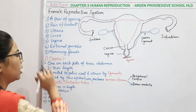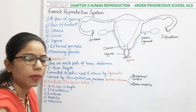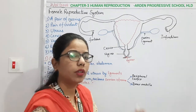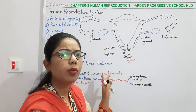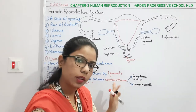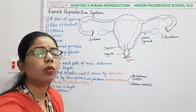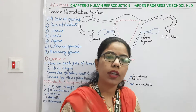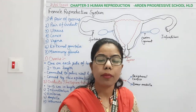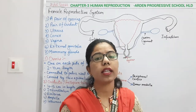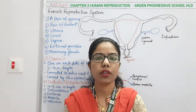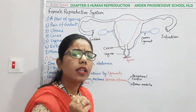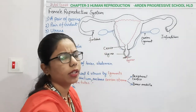Then comes the uterus, then the cervix, vagina, as well as the external genitalia — as we have done in the case of the male reproductive system. And lastly the mammary glands, because they are also associated with reproduction. If I talk about the division, we have two types: primary sexual characteristics and secondary sexual characteristics.